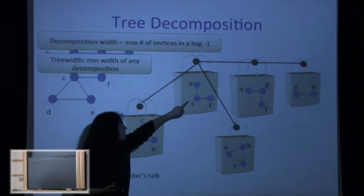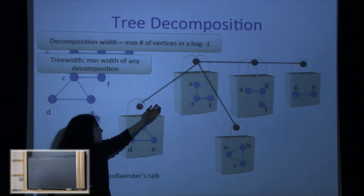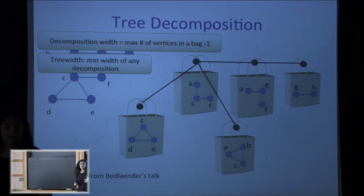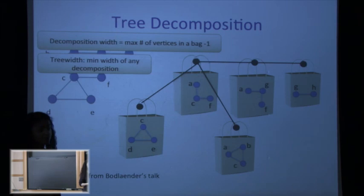If a graph has small tree-width it behaves like a tree: removing the vertices in one bag decomposes the graph into parts that don't interact, so you can still use dynamic programming algorithms. But if the tree-width is large, then any one of these bags can be as complex as the whole graph, so this decomposition doesn't really help you.